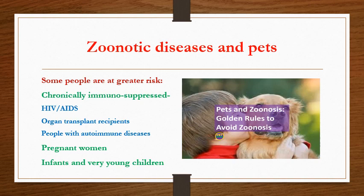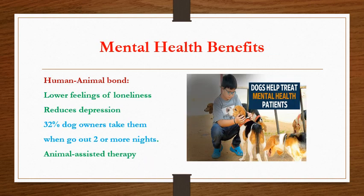Chronically immunosuppressed people are at greater risk, such as those with HIV/AIDS, organ transplant recipients, people with autoimmune diseases, pregnant women, and very young children. So though pets are important, they are a source for zoonosis, and there needs to be a combined approach of animal health and human health. Pets also play an important role in addressing mental health disorders. More and more people are living alone and isolated with mental health disorders, and pets are useful to reduce feelings of loneliness and depression. Animal-assisted therapy is also practiced.